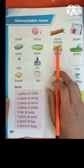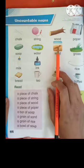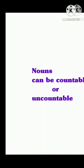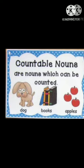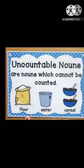Students, firstly I will tell you about countable and uncountable nouns. Nouns can be countable or uncountable. Countable nouns are nouns which can be counted, like dog, books and apples. These are countable things. And uncountable nouns are nouns which cannot be counted, like flour, water and cereal. These are uncountable nouns.